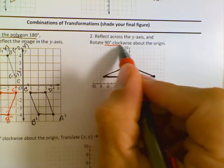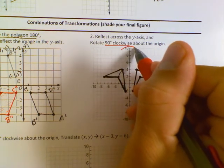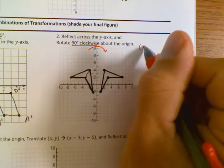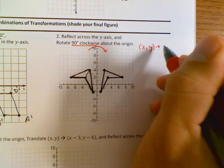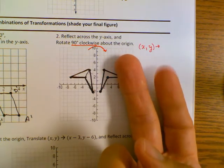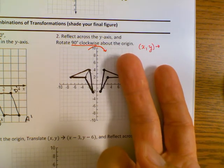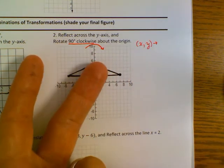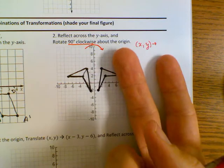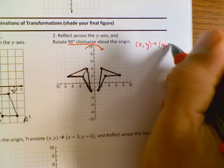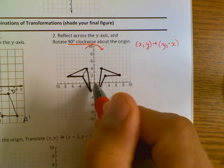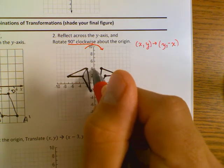Now we're rotating 90 degrees clockwise — that's this direction. Here's a tip I don't share too often: for 90 degrees clockwise, use your right hand and negate the index finger. For 90 degrees counterclockwise, use your left hand and negate that finger. The rule for 90 degrees clockwise is: the new coordinates become (y, negative x).